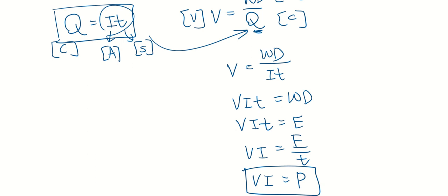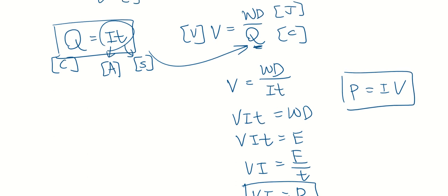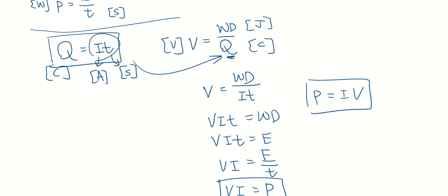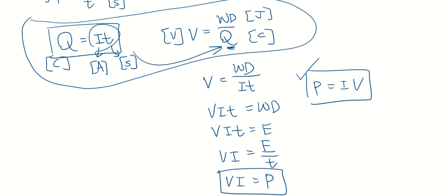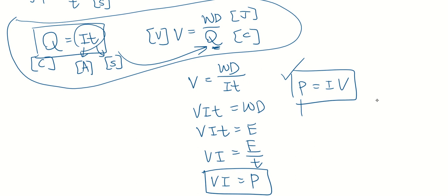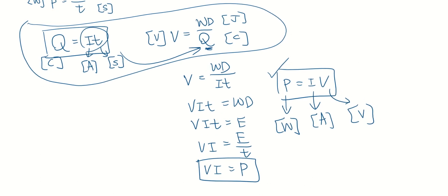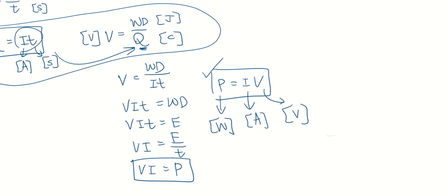You need to memorize this formula P equals IV. So even if you don't know how to derive this formula from using these two formulas that we have learned before, all you need to do is memorize this formula P equals IV. P's unit is watts, I is ampere, V will be volt.